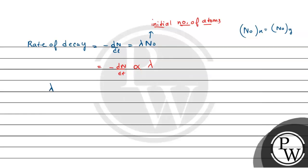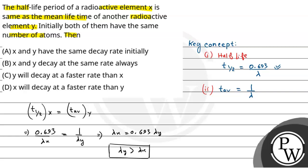Now, since lambda of Y is greater than lambda of X, we can conclude that minus dN by dt — that is the rate of decay in case of Y — will be greater than the rate of decay of X. So Y will decay at a faster rate than X. The rate of decay of Y is higher.